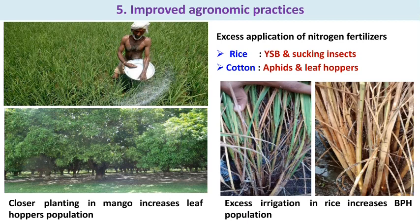The fifth cause is improved agronomic practices. Excess application of nitrogenous fertilizers causes resurgence of pests or increases pest population. In rice, yellow stem borer and sucking pests increase due to excessive nitrogenous fertilizer application. In cotton, aphids and leafhoppers increase. In mango orchards, closer planting increases leafhopper populations. Excess irrigation in rice increases the brown planthopper population. These improved agronomic practices lead to increased insect populations.